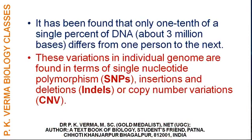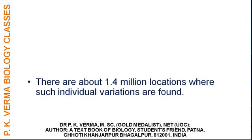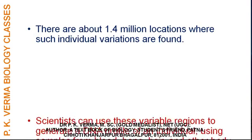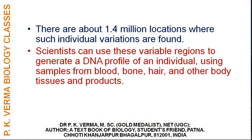These variations in individual genomes are found in terms of single nucleotide polymorphism (SNPs), insertions and deletions (indels), or copy number variations (CNVs). There are about 1.4 million locations where such individual variations are found. Scientists can use these variable regions to generate a DNA profile of an individual using samples from blood, bone, hair, and other body tissues and products.